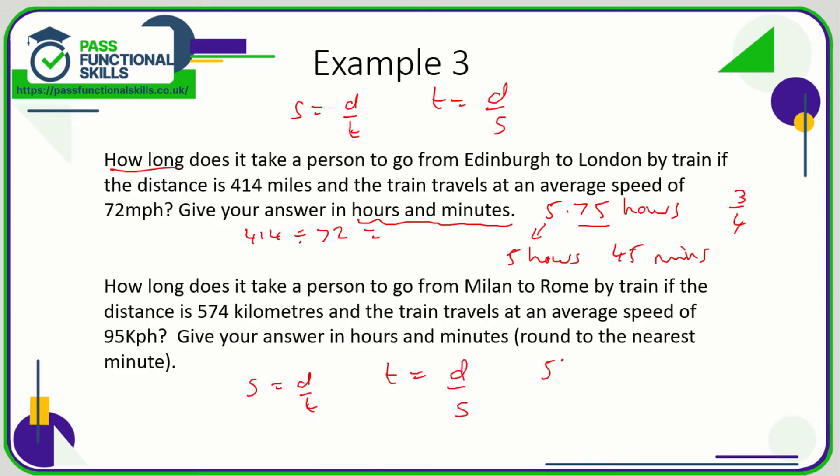574 divided by 95 unfortunately is going to give us a pretty horrendous answer: 6.0421 dot dot dot. So we know that that is six hours, six full hours. Now we're interested in this bit. What does this represent?